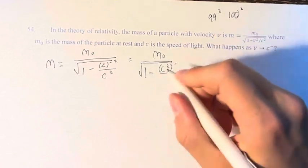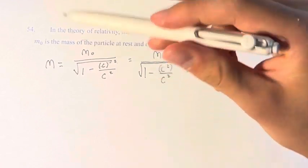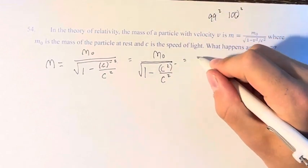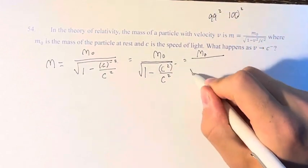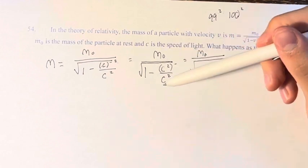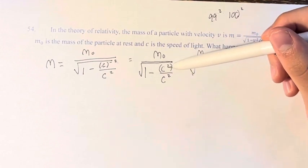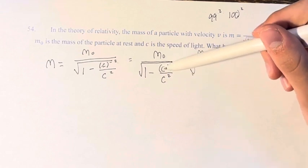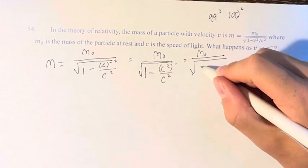However, we're not there completely, and we're taking this over c². If we have numbers slightly less than c² but approaching c², this is approaching 1, so we get 1 minus 1.